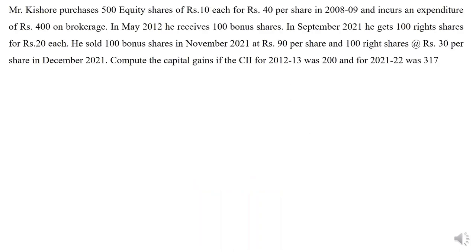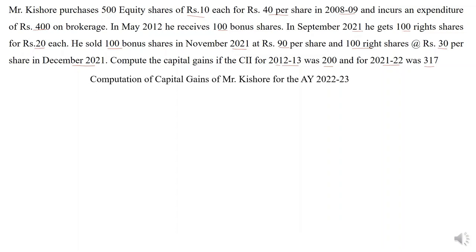The first question: Mr. Kishore purchases 500 equity shares of Rs. 10 each for Rs. 40 per share in 2008-09 and incurs an expenditure of Rs. 400 on brokerage. In 2012 he receives 100 bonus shares. In September 2021 he gets 100 right shares for Rs. 20 each. He sold the 100 bonus shares in November 2021 at Rs. 90 per share, and 100 right shares at Rs. 30 per share in December 2021. Compute capital gains if the CII for 2012-13 is 200 and for 2021-22 is 317. The title is: Computation of Capital Gains of Mr. Kishore for the assessment year 2022-23.